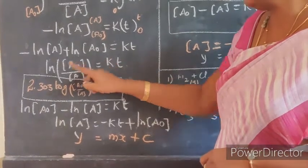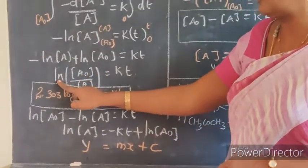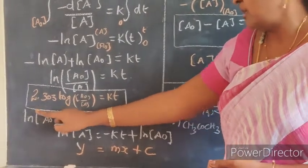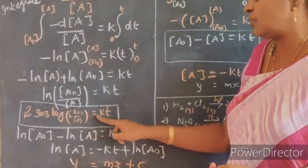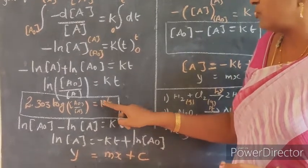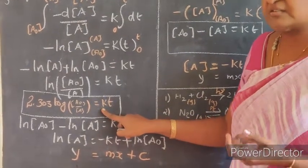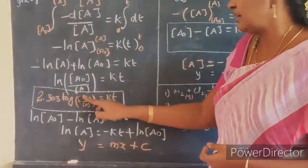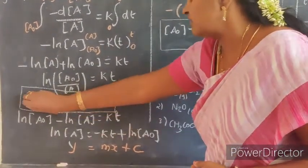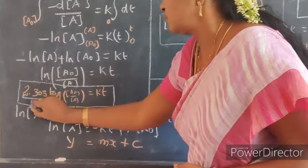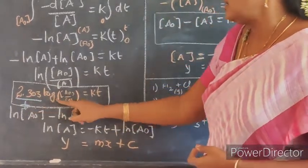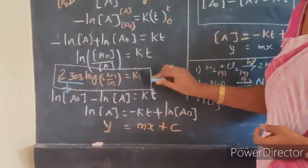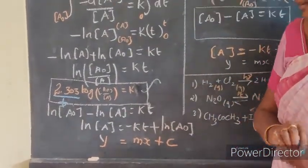Instead of ln, if you want to use log, you have to multiply by 2.303. So 2.303 log(A₀/A) is equal to K into T. We want only K, the rate constant for the first order reaction. So rearranging: K equals 2.303 divided by T times log(A₀/A). This is the rate constant for first order reaction.